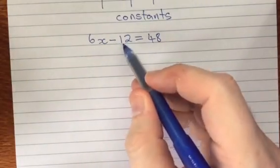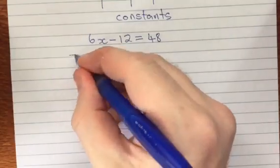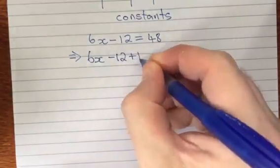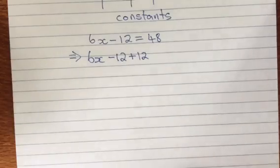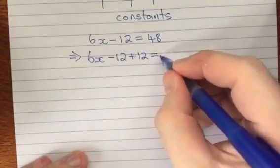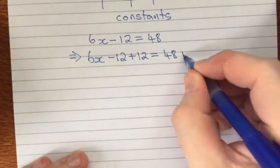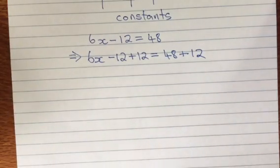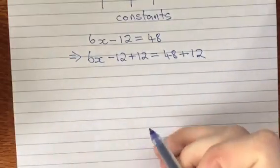Now to get rid of a minus 12 what I'm going to do is add 12. So I'm going to write on the left hand side 6x minus 12 plus 12 because minus 12 plus 12 is 0 so it's going to disappear. But remember we have to make sure we do the same thing to both sides. So I'm going to go 48 plus 12 on the right side and we're doing that because we don't want to change what the equation actually is. We just want to change what it looks like.